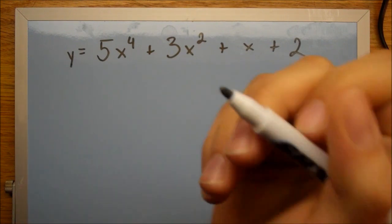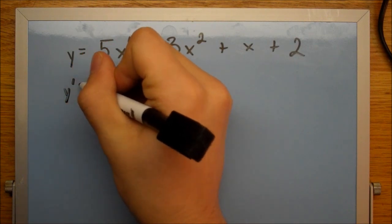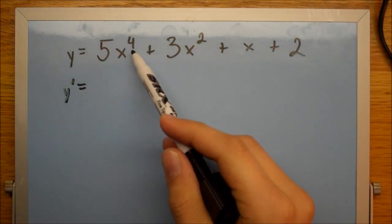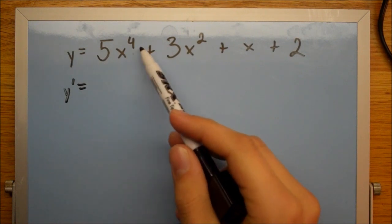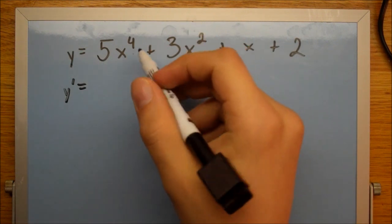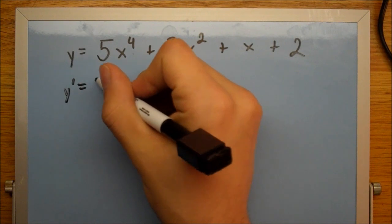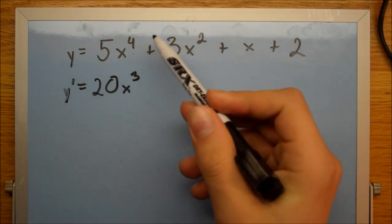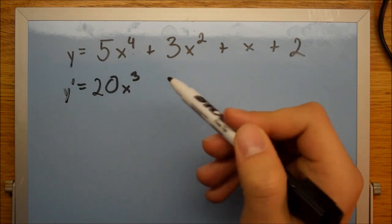So when you take the derivative, y prime, all you do is multiply the power times the coefficient and subtract 1 from the power. So you have 4 times 5 is 20x cubed, since we have 5 times 4 equals 20, and 4 minus 1 equals 3.